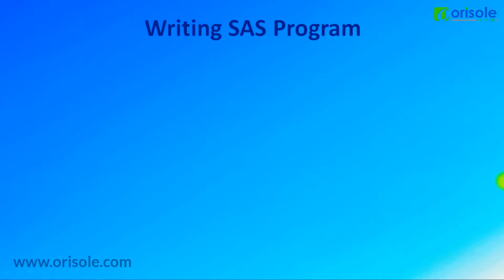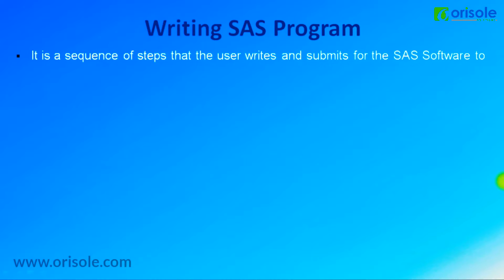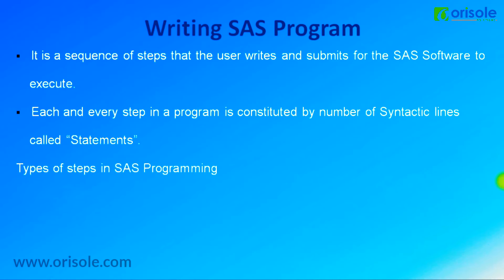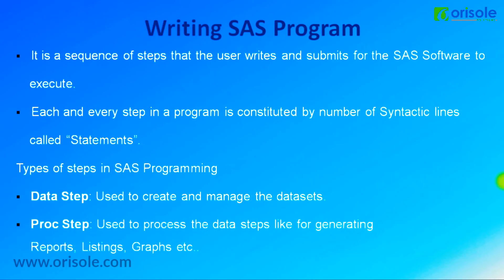Any software program is a combination of steps, and many steps constitute a SAS program. Each step is constituted by a series of syntactic things called statements. Basically, there are two types of steps in a SAS program: one is called a Data Step and the second is called a Proc Step. The Data Step is used to create or acquire research data from other databases like Oracle into SAS. The Proc Step, also called the Procedure Step, is used to generate reports or figures like graphs, which makes it easy to analyze whether the drug is effective or not.